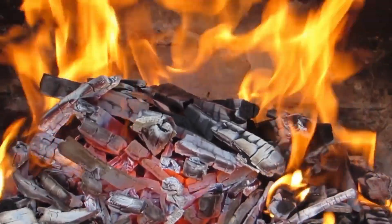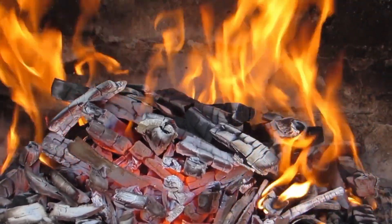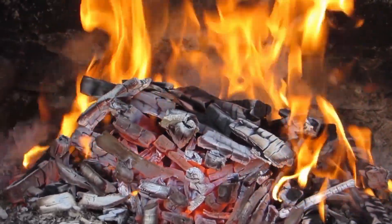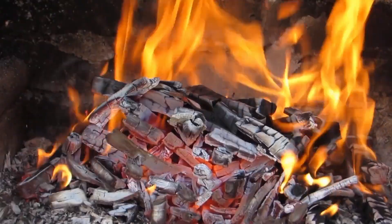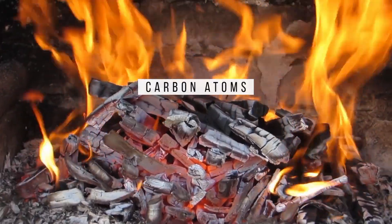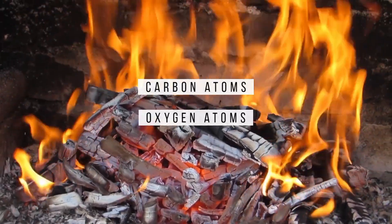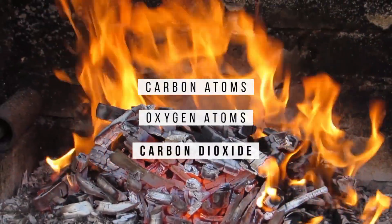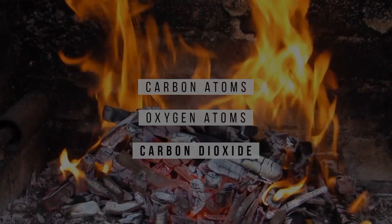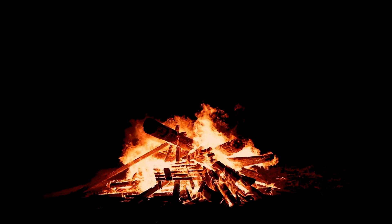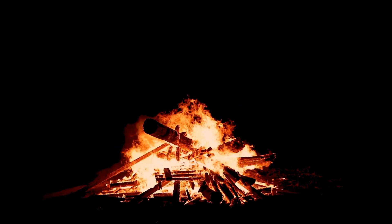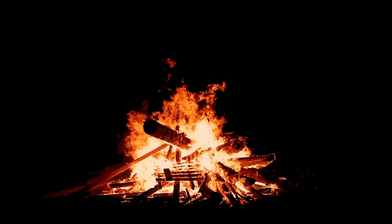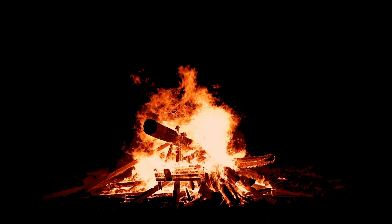As the wood continues to burn, the embers begin to glow. Glowing embers result from the wood's carbon atoms bonding with oxygen atoms to form carbon dioxide, another exothermic reaction. This reaction occurs at the surface of the wood, where the temperature is high enough to sustain that reaction.